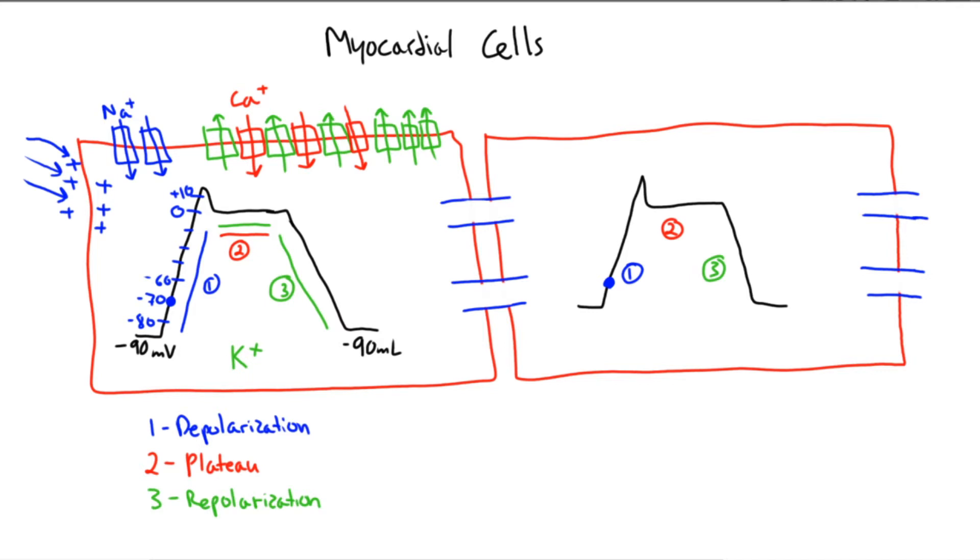Here we have a ventricular myocardial cell. Before the cell is stimulated, in this case by the SA or AV node, the cell is in a state of resting membrane potential.